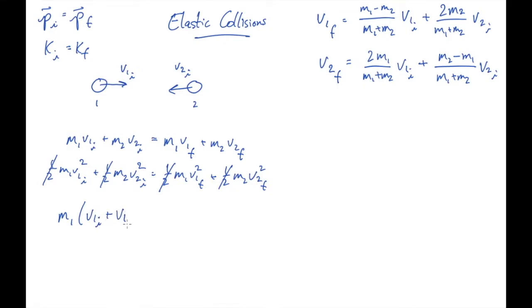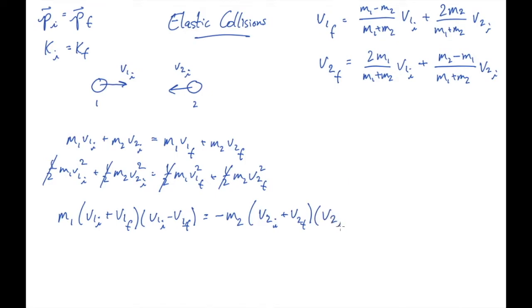So the kinetic energy equation, rearranged with 1's on the left and 2's on the right, becomes: m1·(v1i + v1f)(v1i - v1f) = -m2·(v2i + v2f)(v2i - v2f). The momentum equation rearranged similarly gives: m1·(v1i - v1f) = -m2·(v2i - v2f). Now, if we divide these two equations, something very nice happens.